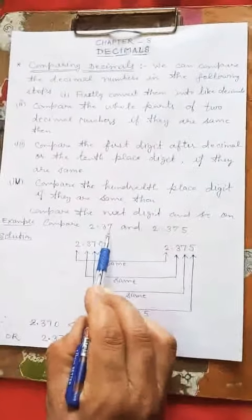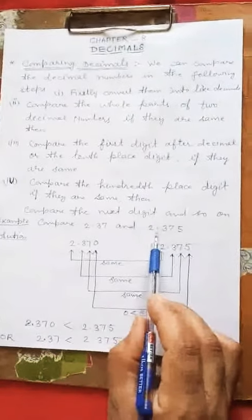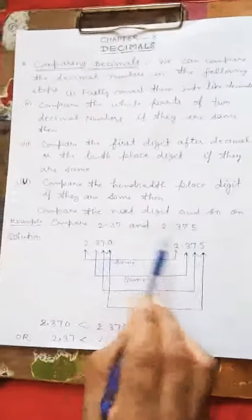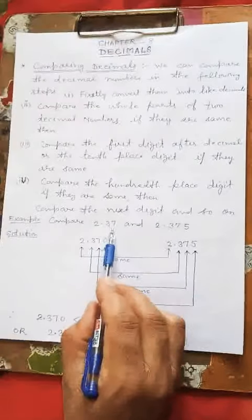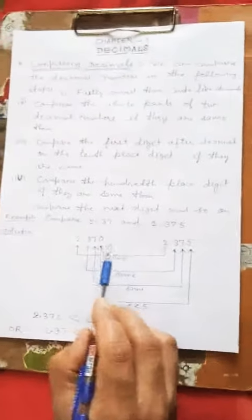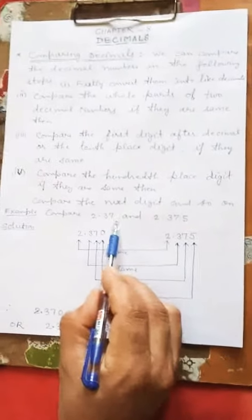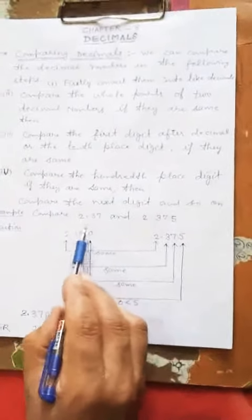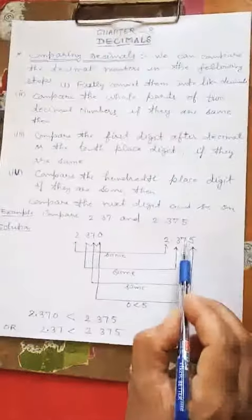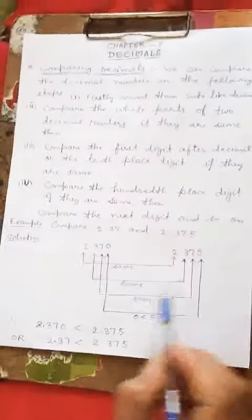Compare 2.37 and 2.375. We see that these two decimal numbers are not like decimals — there are two digits after the decimal in the first number and three digits after the decimal in the second. So first we convert them into like decimals by putting a zero in the first decimal number.